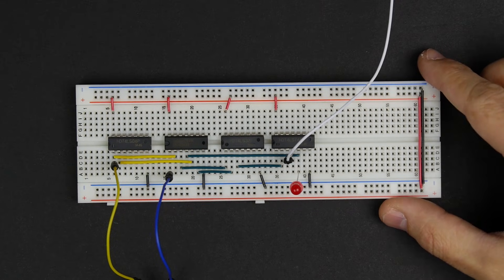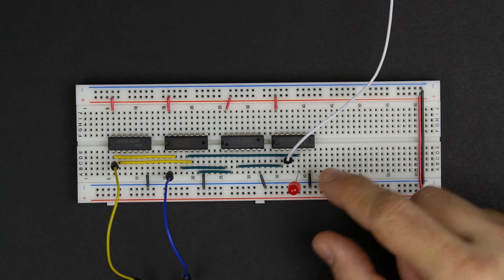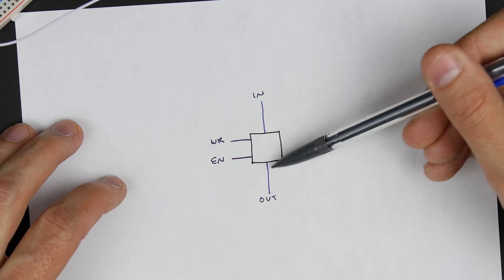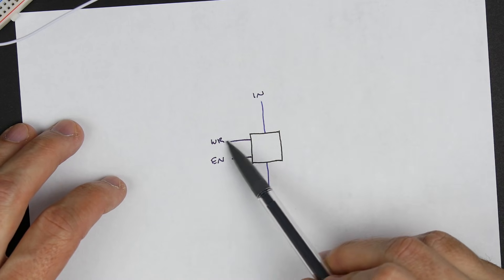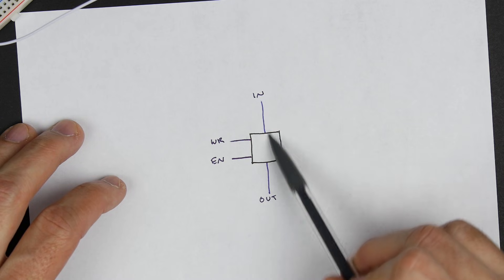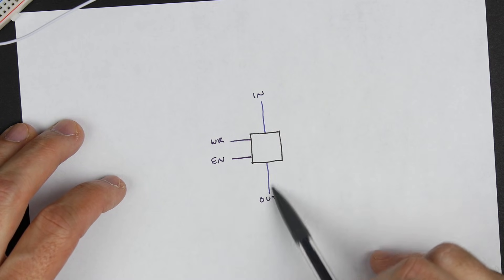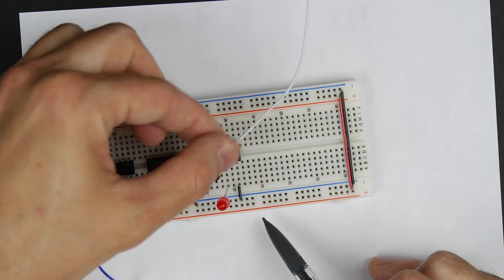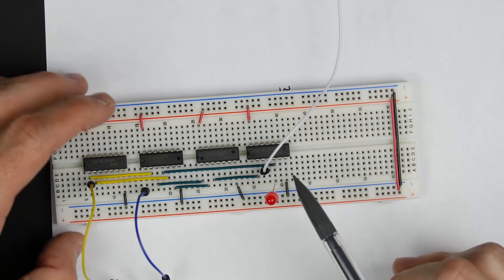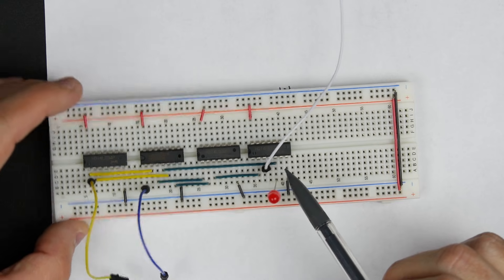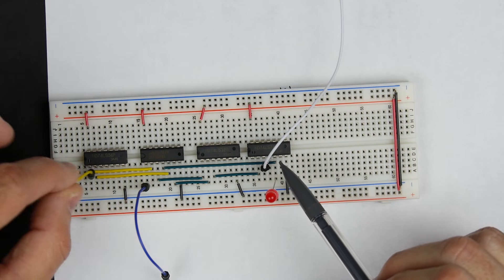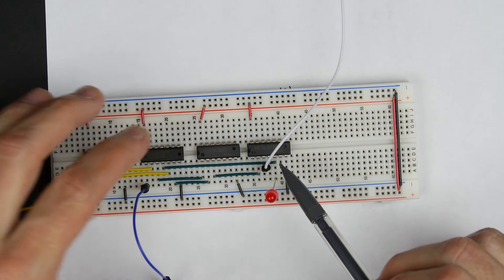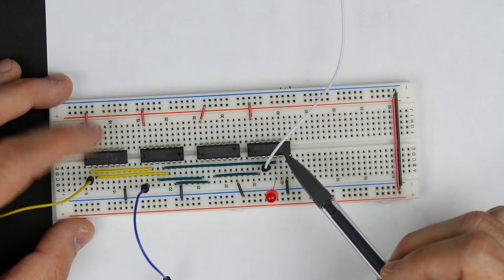In a previous video we made this one-bit register. It's got a single input, a single output, an LED, and it stores one bit of data. The interface has an input, an output, a write signal which if active stores whatever's coming in on the input, and an enable signal which when active sends whatever bit is stored to the output. The registers also have a clock signal which makes this a synchronous register — it only reads data on the rising edge of the clock.